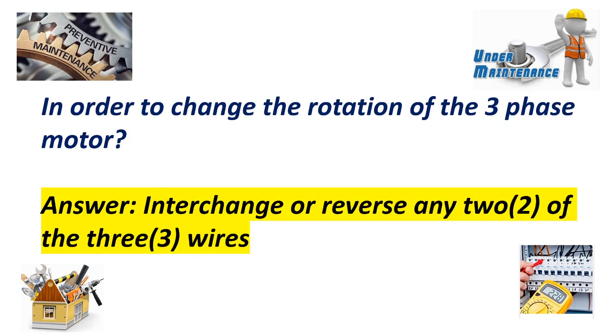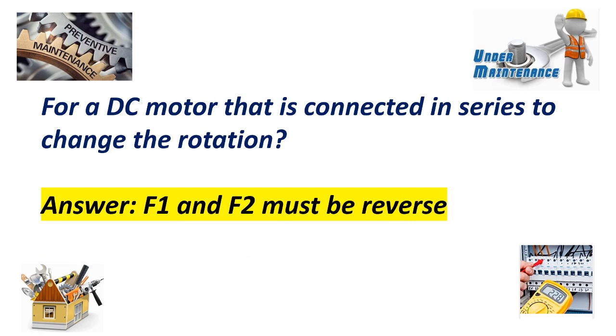In order to change the rotation of a three-phase motor? Answer: Interchange or reverse any two of the three wires. For a DC motor that is connected in series, to change the rotation? Answer: F1 and F2 must be reversed.